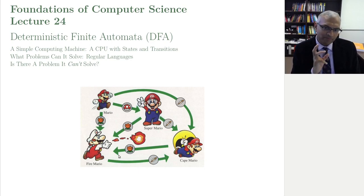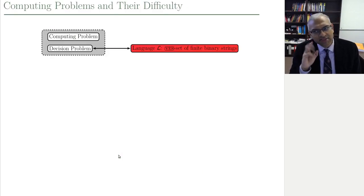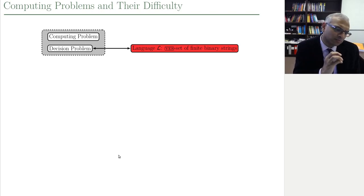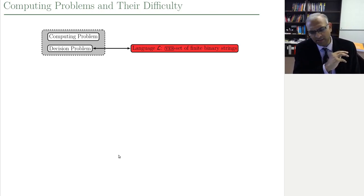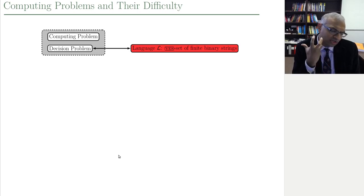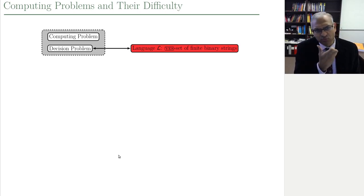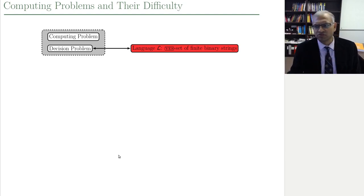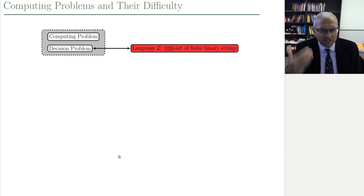Okay, quick review. The main ideas from last time. The main idea from last time was: how do we define a computing problem? We said we're going to focus on decision problems. That is a definition of a computing problem that has withstood the test of time — it's quite general. You can solve optimization problems, search problems, and so on, essentially by posing them as a sequence of decision problems.